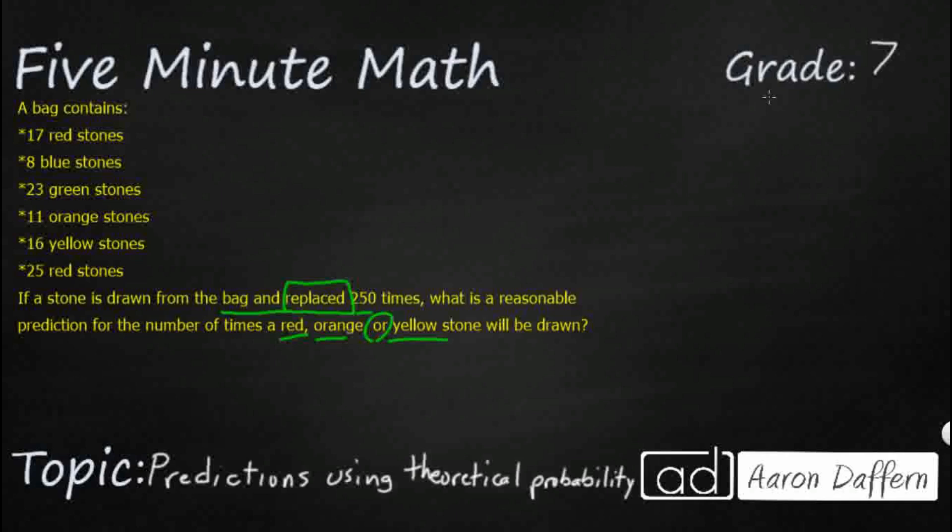So what we're doing is we are drawing a stone from the bag, but if we don't replace it, then the probability is going to change every time because we're not going to have however many stones. We've got to figure out how many stones this is. So let's figure that out, and we'll see why that replace is so important. So we just need to add a big addition here, 17, 8, 23, 11, 16, and 25. We just need to find a total.